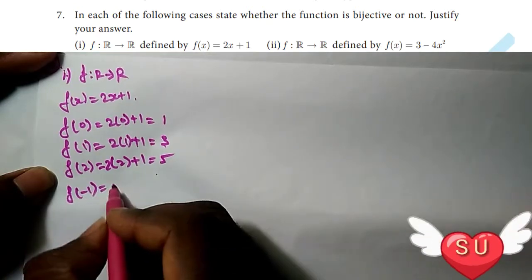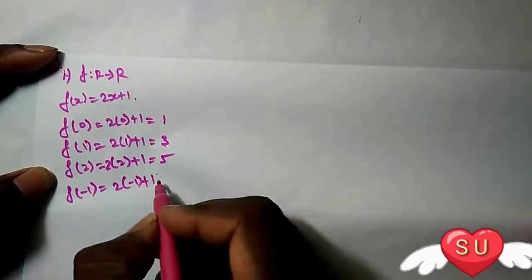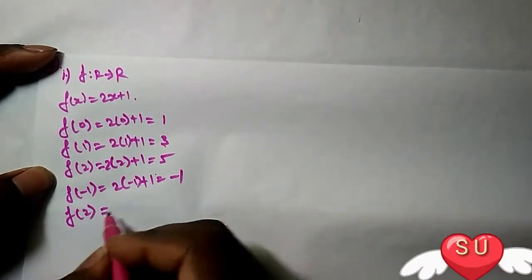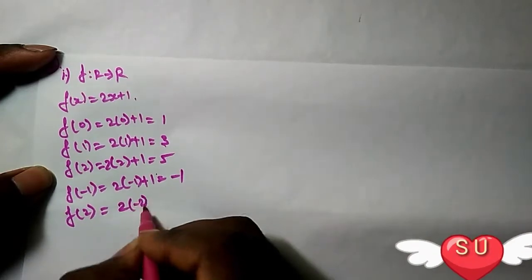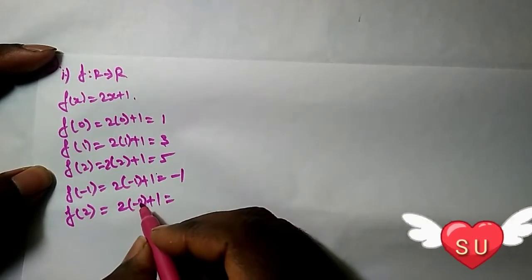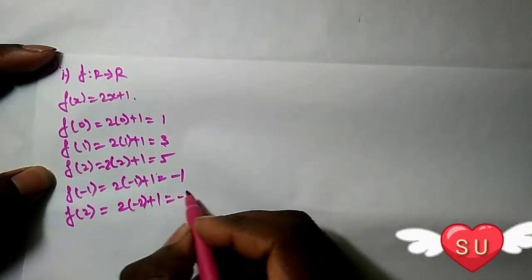f(-1) = -1. Let's also check f(-2). f(-2) = 2(-2) + 1 = -4 + 1 = -3.